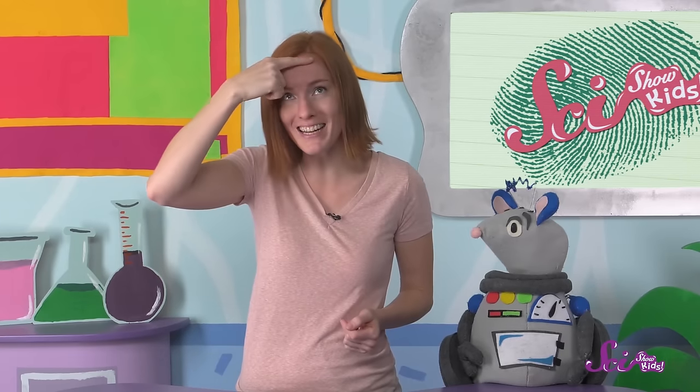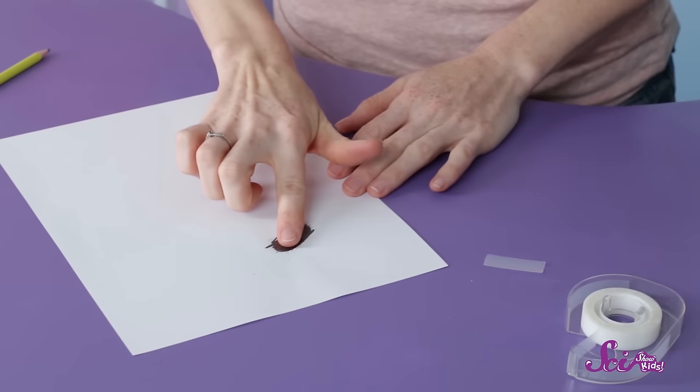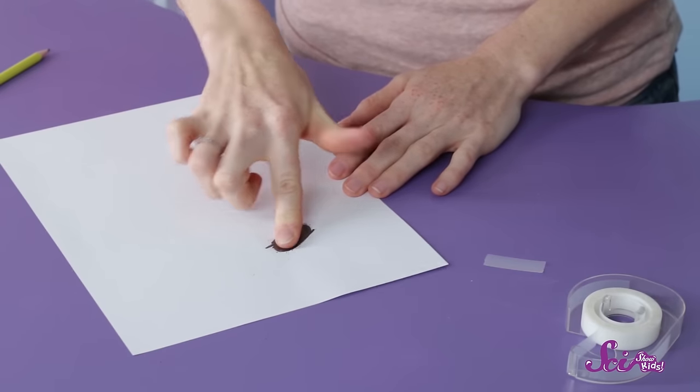Now, take your pointer finger and rub it on your forehead right next to your hairline. This will help to put some extra oil on that finger, and to make a better fingerprint. Press your pointer finger on the pencil spot. Rock it back and forth, like this.